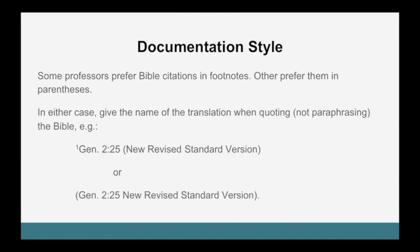Some professors prefer that Bible citations be in footnotes; others prefer them in parentheses within the text of the paper. In either case, give the name of the translation when quoting but not when paraphrasing the Bible. For example, to quote Genesis 2:25, a footnote would look like this with Genesis abbreviated to the first three letters, followed by the full name of the translation in parentheses. Or if not using footnotes for Bible citations, you can include the citation in the body of your paper with Genesis abbreviated again to the first three letters, followed by chapter, verse, and translation name.